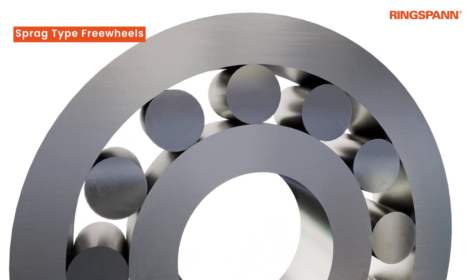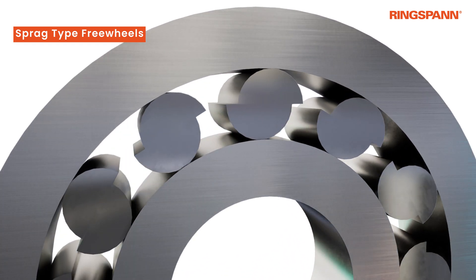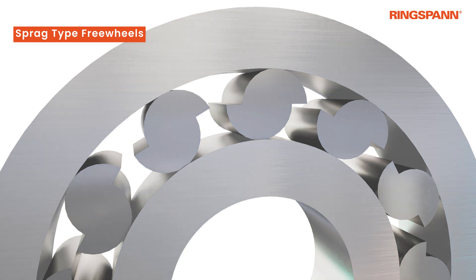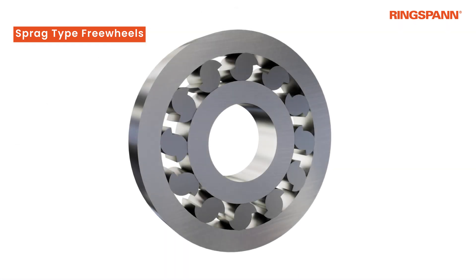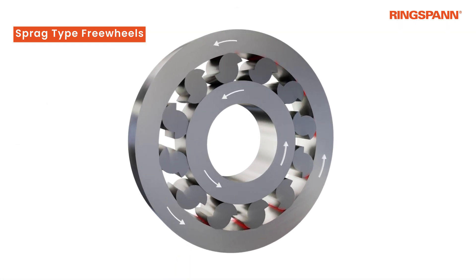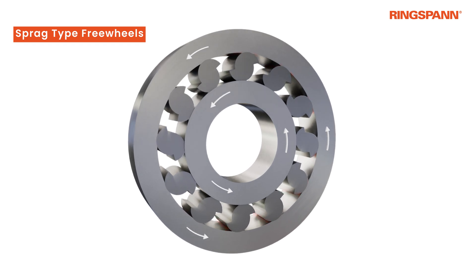The Spragues are basically like a roller sliced in half and displaced. If the outer ring now moves counterclockwise while the inner ring is fixed, friction will cause the Spragues to roll counterclockwise as well.